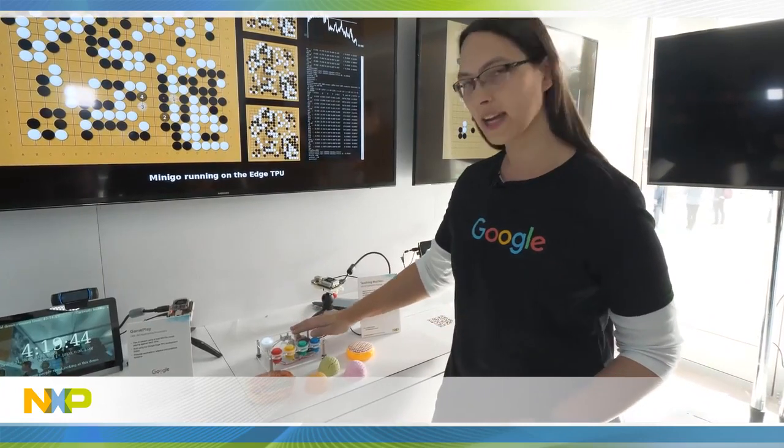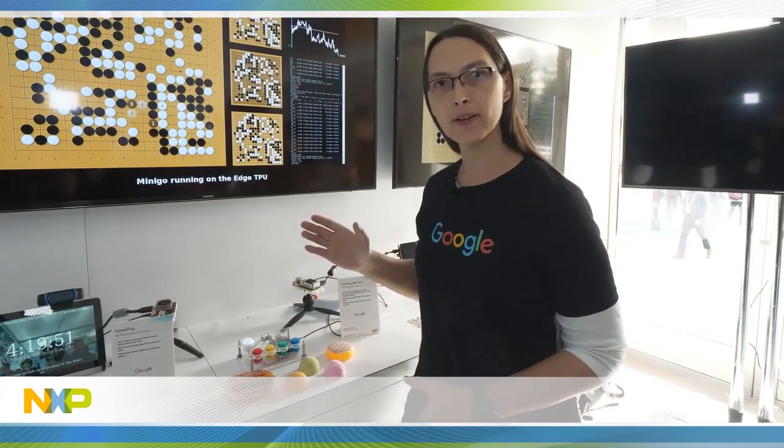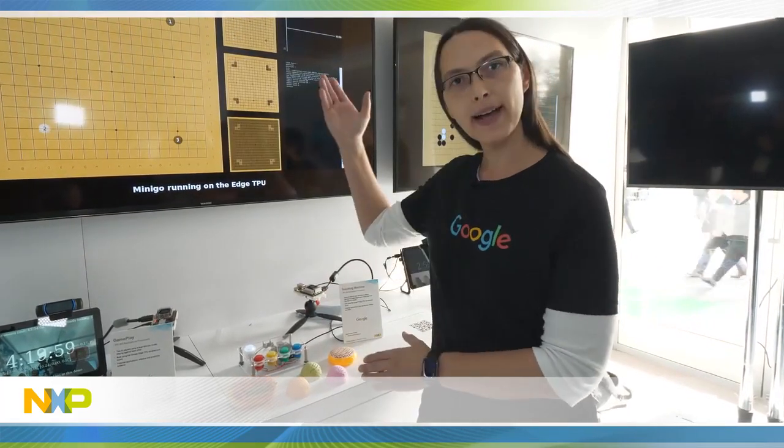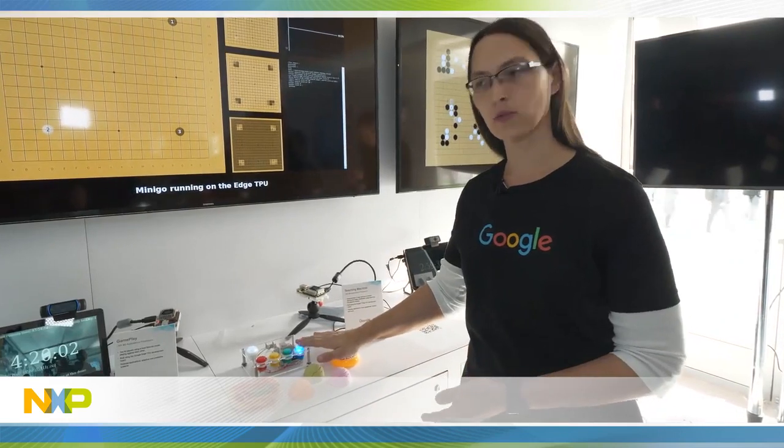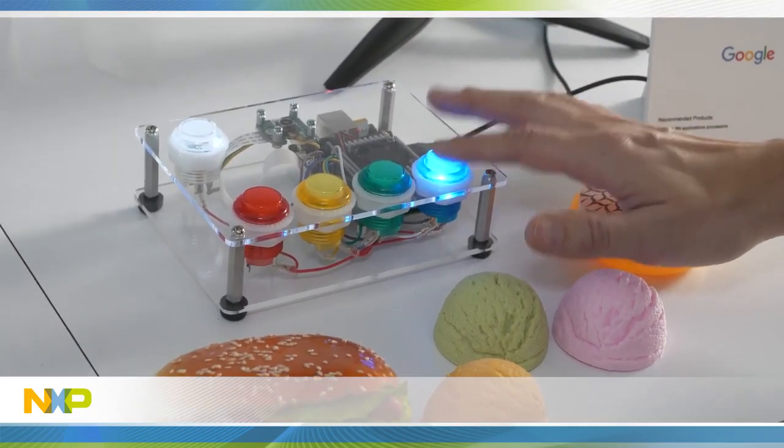Essentially it has a camera pointing up at the sky. The first thing I have to do is train it to teach it about what the background is so it can differentiate between the objects I'm about to show it and what the background is. I press one of these buttons to tell it what it's looking at. So now it knows what the background is.